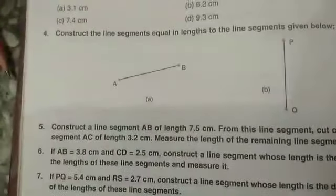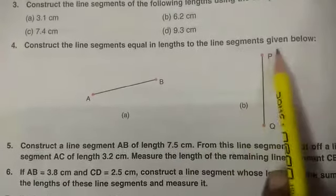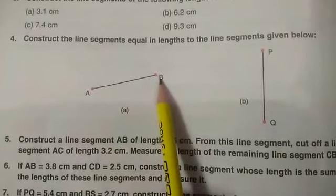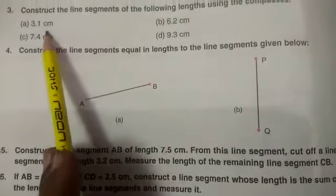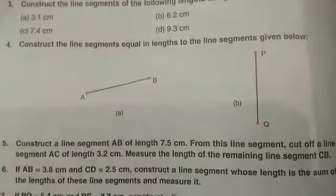Now our question number four. I am showing you the book. Here we are given: construct the line segment equal in length to the line segment given below. You will measure this length using your scale, and in the same way as you have done in question number three, you will do question four in your notebook. This is your homework now, to complete your worksheet number one.